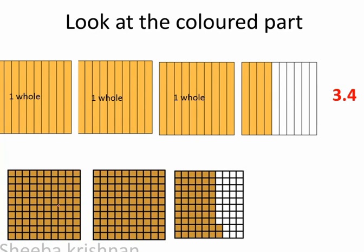Here this square is divided into 100 equal parts and all parts are shaded, so we can call it 1 whole. And here also 1 whole. And here 62 out of 100 is shaded, so 2 and 62 by 100. In decimal form we can write it as 2.62.